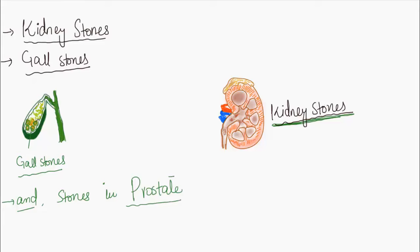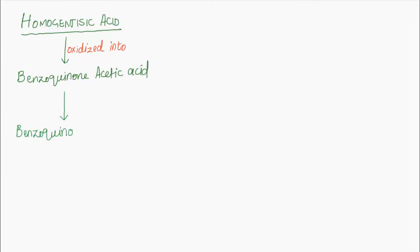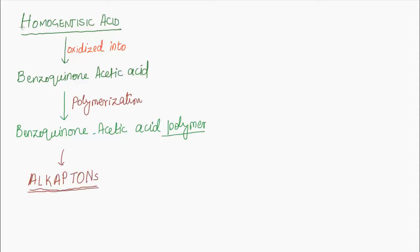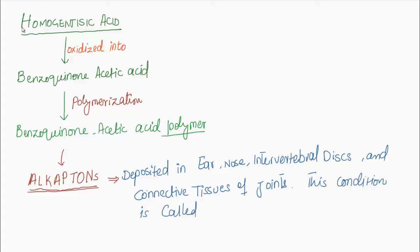Kidney stones, gallstones, and stones in the prostate and salivary glands can occur. Homogentisic acid is oxidized to benzoquinone acetic acid, which polymerizes into benzoquinone acetic acid polymer that forms alkaptons. Alkaptons are deposited in hair, nose cartilages, intervertebral discs, and connective tissues of joints.